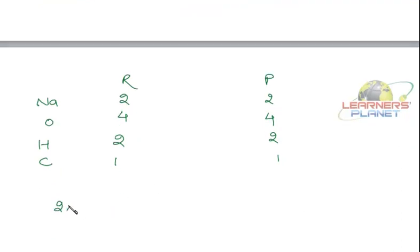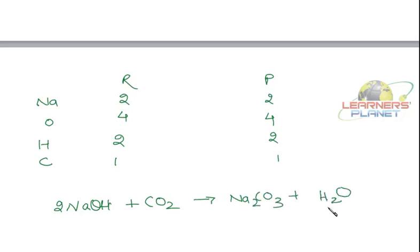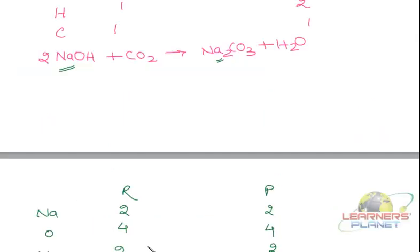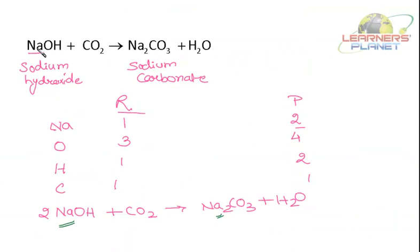Our equation has become: 2NaOH plus CO₂ is giving Na₂CO₃ plus H₂O. Many a times the equation looks to be complex — there are so many elements, so many numbers. But you have to keep one thing in mind: write the elements vertically, write the reactant side and product side, and just write the number of atoms of each element present. It's not always a very complicated equation — it just looks difficult because so many elements are there, but it's not that difficult, it's easy.